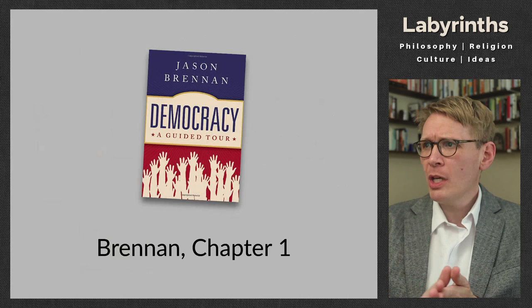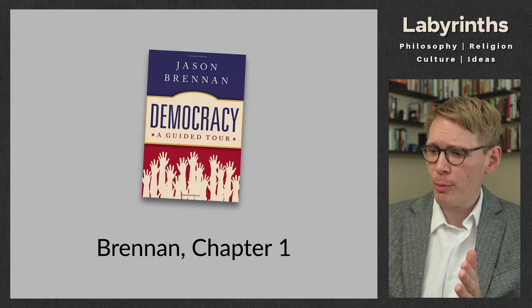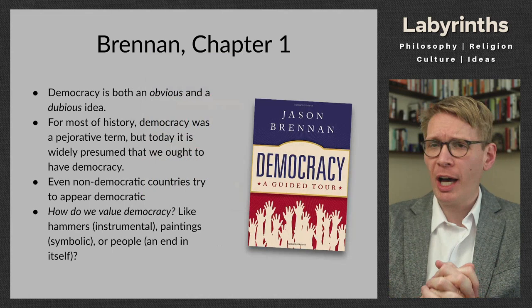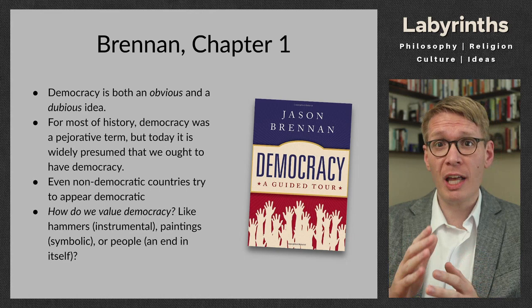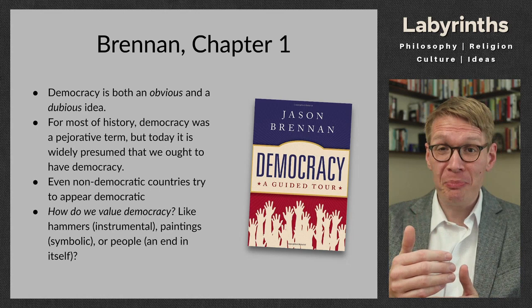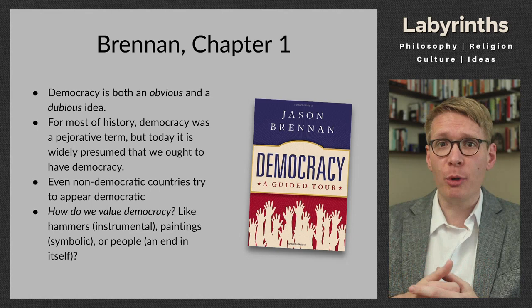Let's see how Brennan kicks off his text in chapter one. Democracy, he suggests, is both an obvious idea and a dubious idea. This is a really neat way to express some of the complexities that stretch across the history of debate about this concept. It's an obvious idea because, clearly, a person should have some say in decisions that are made with respect to themselves — something that would seem obvious to most of us today.